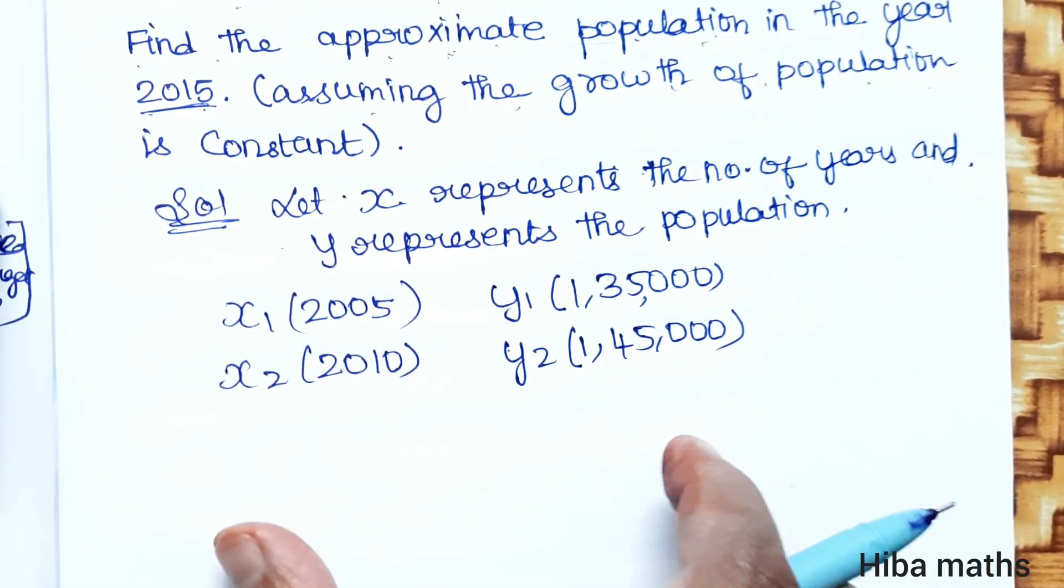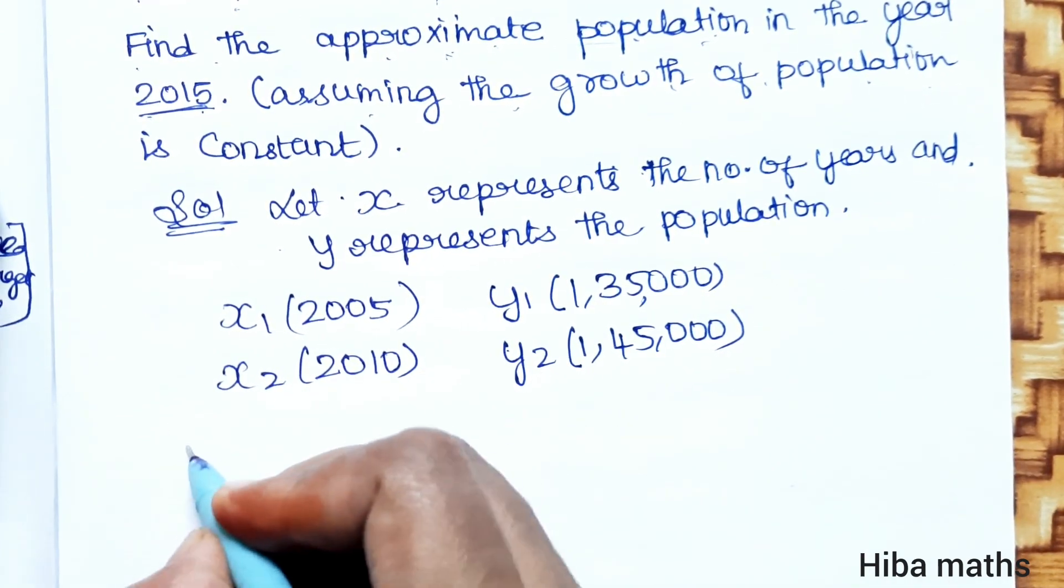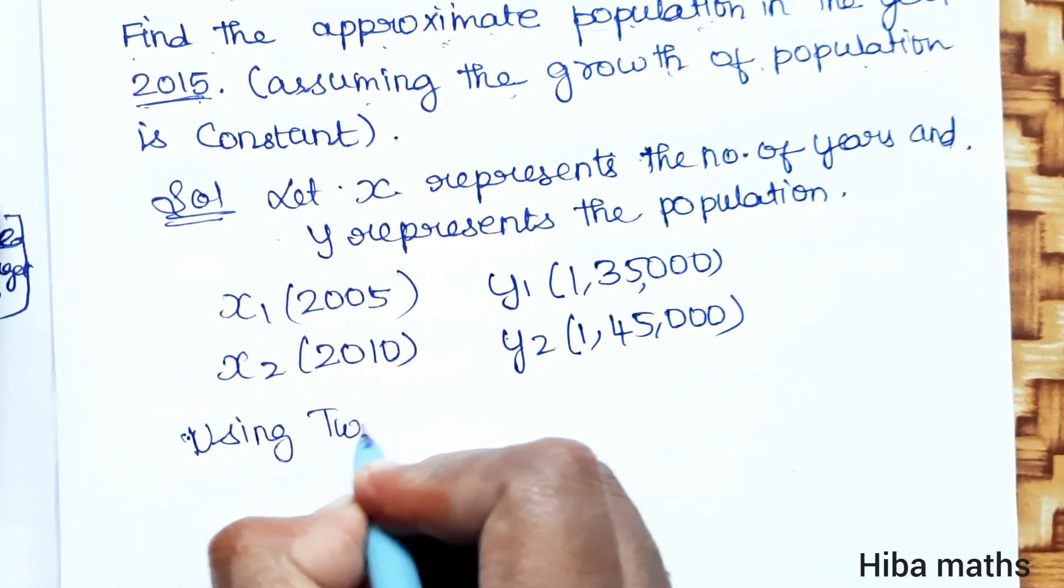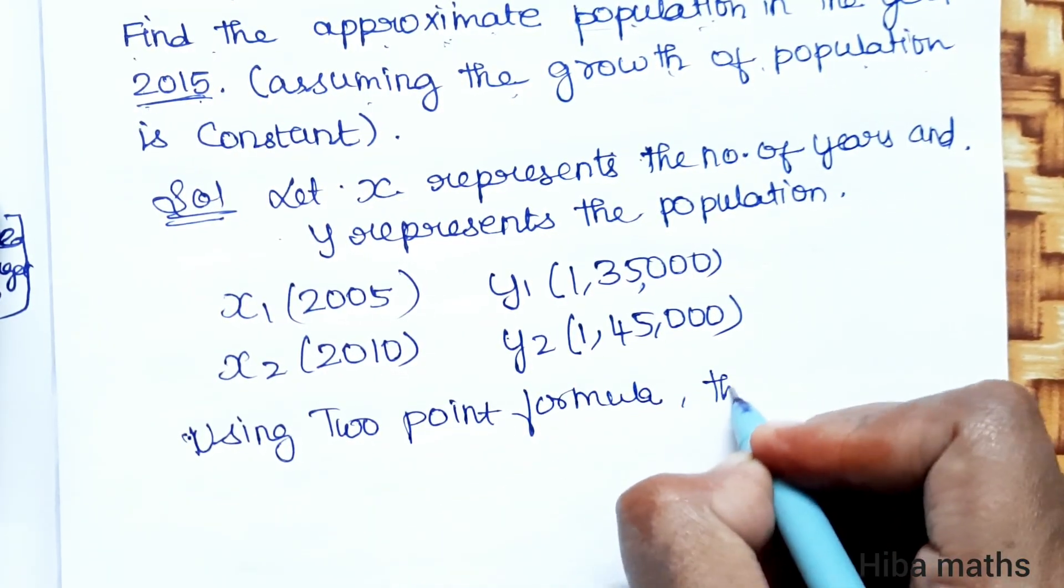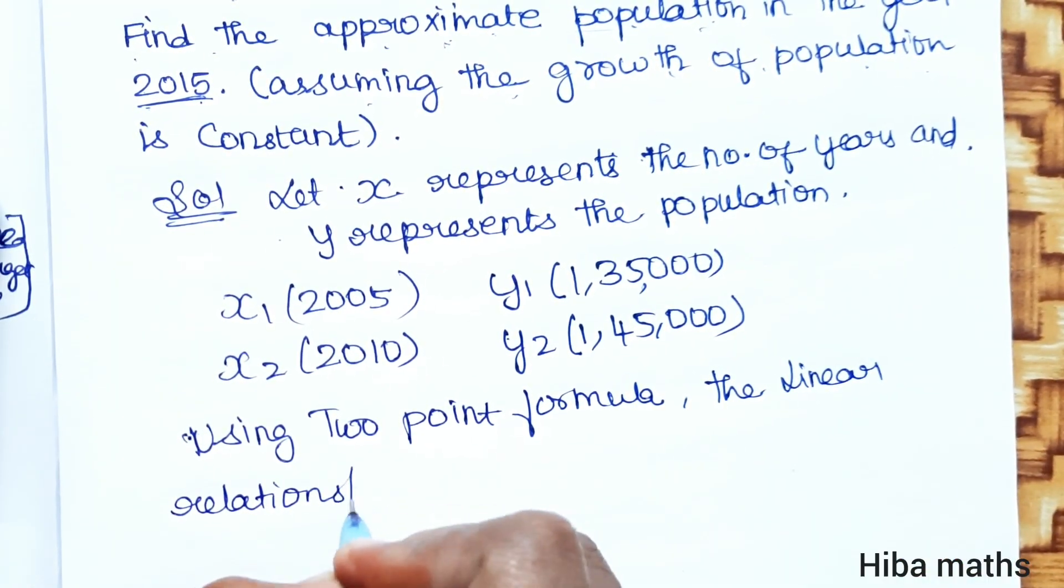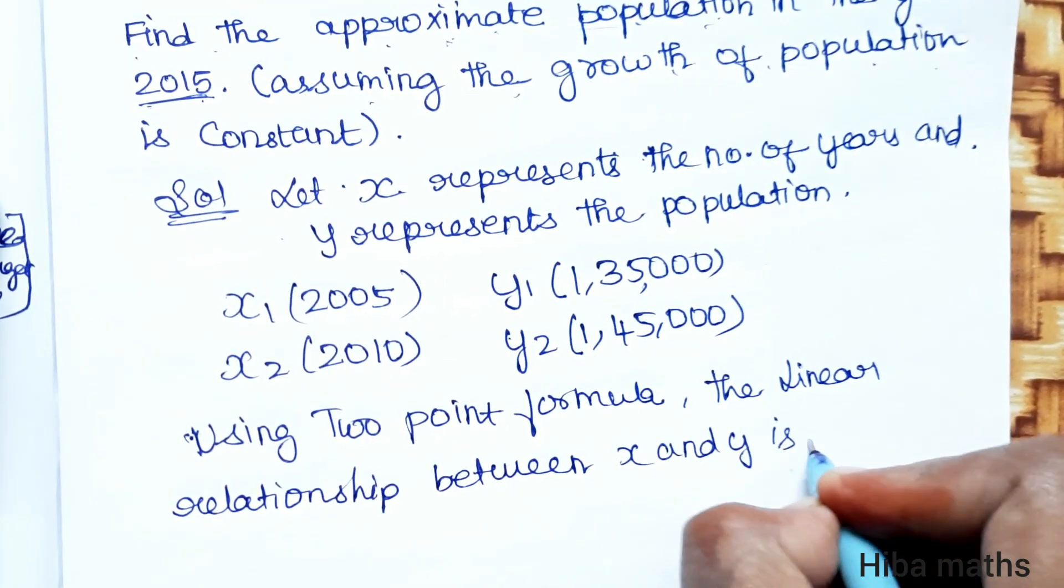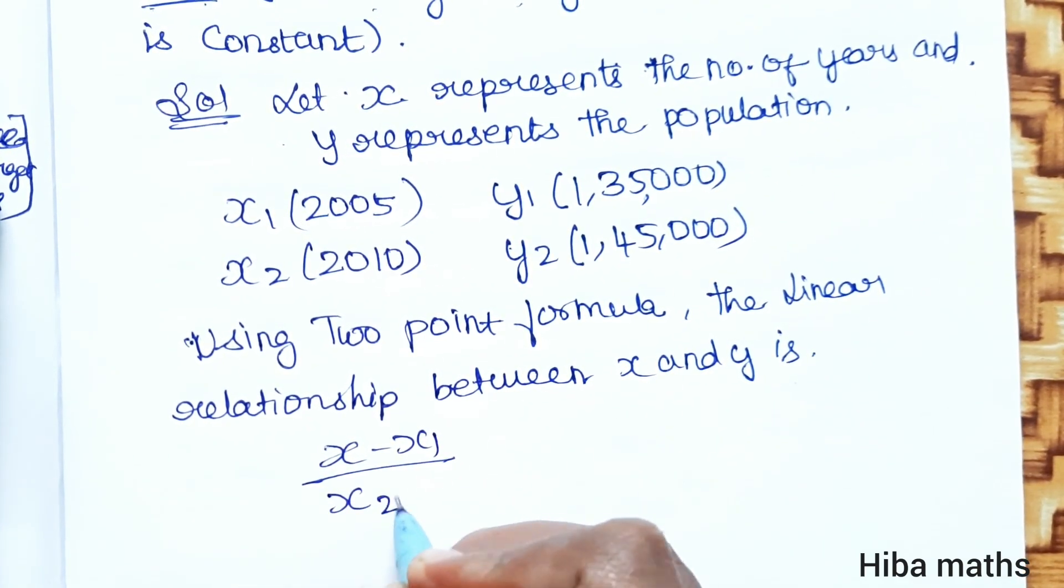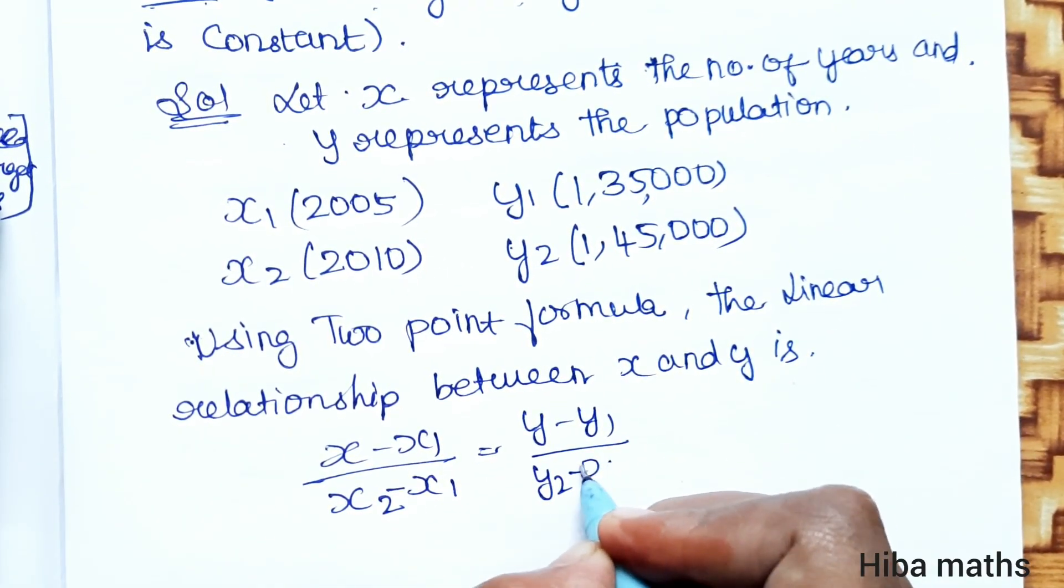Now, we have to connect two points to find the relationship between year and population. Using two-point formula, the linear relationship between x and y is: (x - x1)/(x2 - x1) = (y - y1)/(y2 - y1).